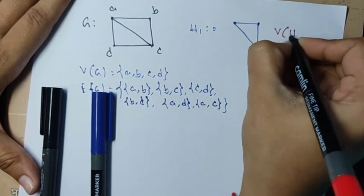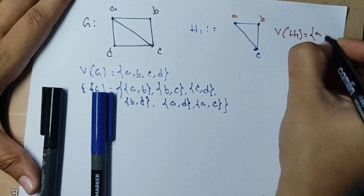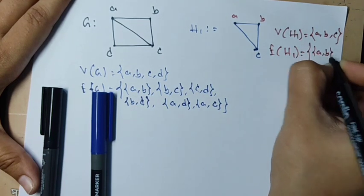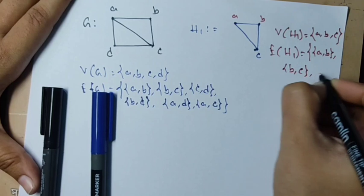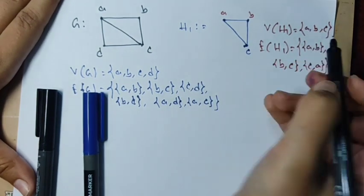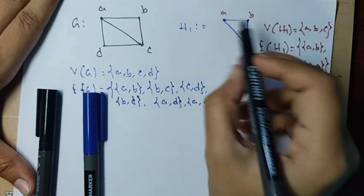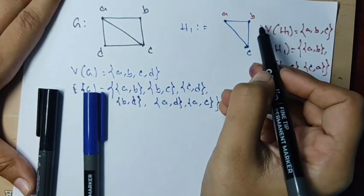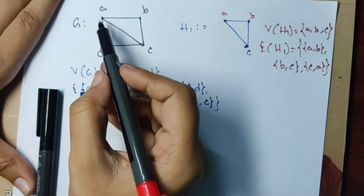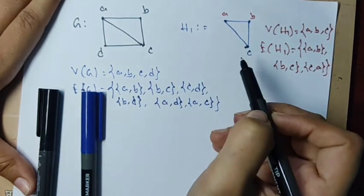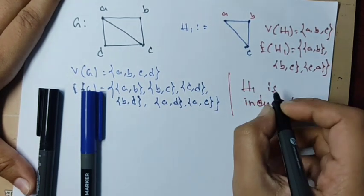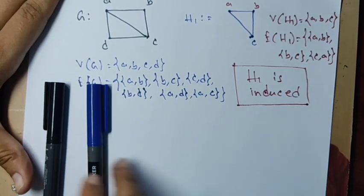Take H1 with vertex set {A, B, C} and edge set {AB, BC, CA}. For any two vertices: AB edge is in G and in H1 ✓; BC edge is in G and in H1 ✓; AC edge is in G and in H1 ✓. So H1 is an induced subgraph.